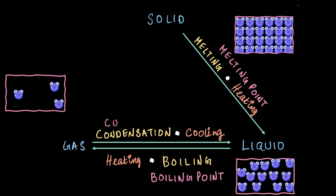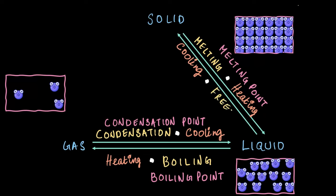Now for the reverse process: when a gas cools down and becomes a liquid, that's called condensation, and it happens at the condensation point - the same temperature as that of boiling point. For water, that's also 100 degrees Celsius. If we cool the liquid further, it turns back into solid in a process known as freezing.